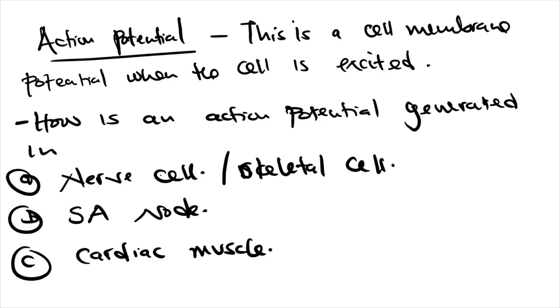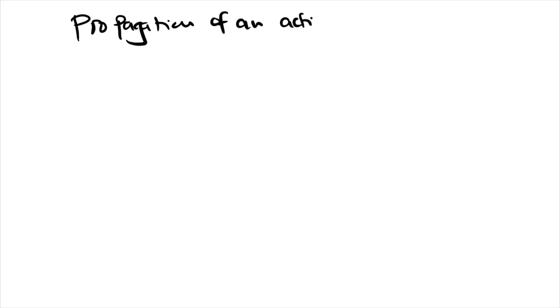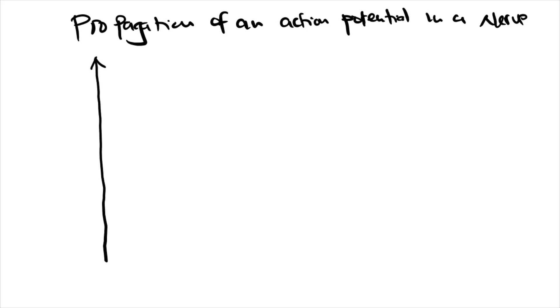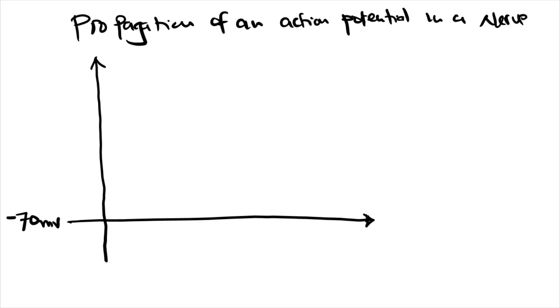Let's look at propagation of an action potential in a nerve cell. The graph for an action potential has the resting membrane potential at negative 70 millivolts for a nerve cell. At this potential, the membrane potential of a nerve cell is at rest.